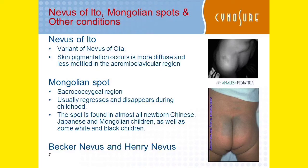Another question involves the Mongolian spot. Japanese, Chinese, and Mongolian children commonly get this. It is a bluish or blackish coloration that occurs in the sacrococcygeal region and usually regresses and disappears during childhood.